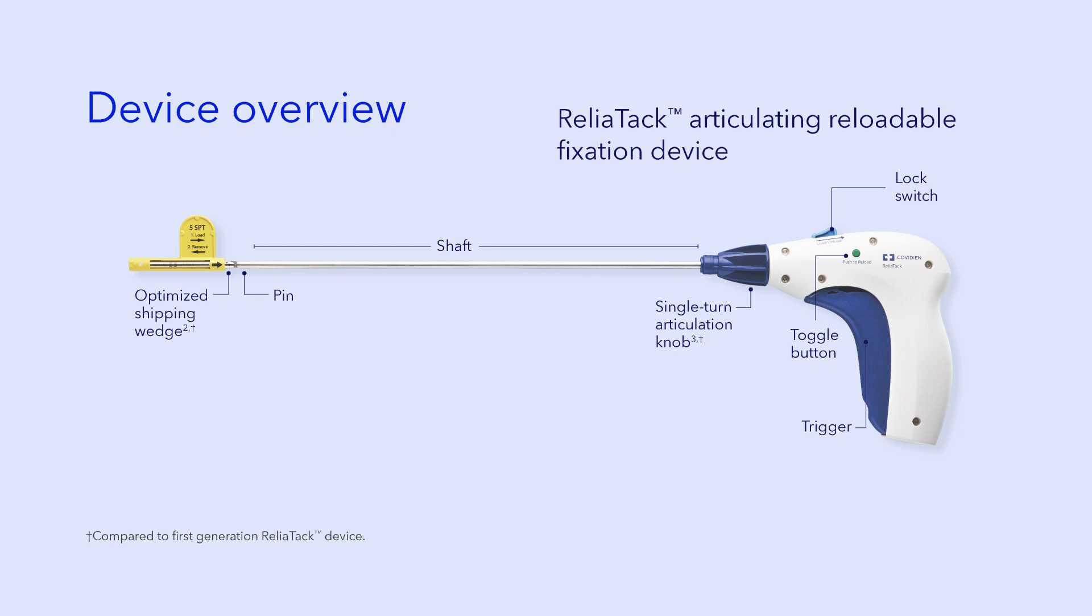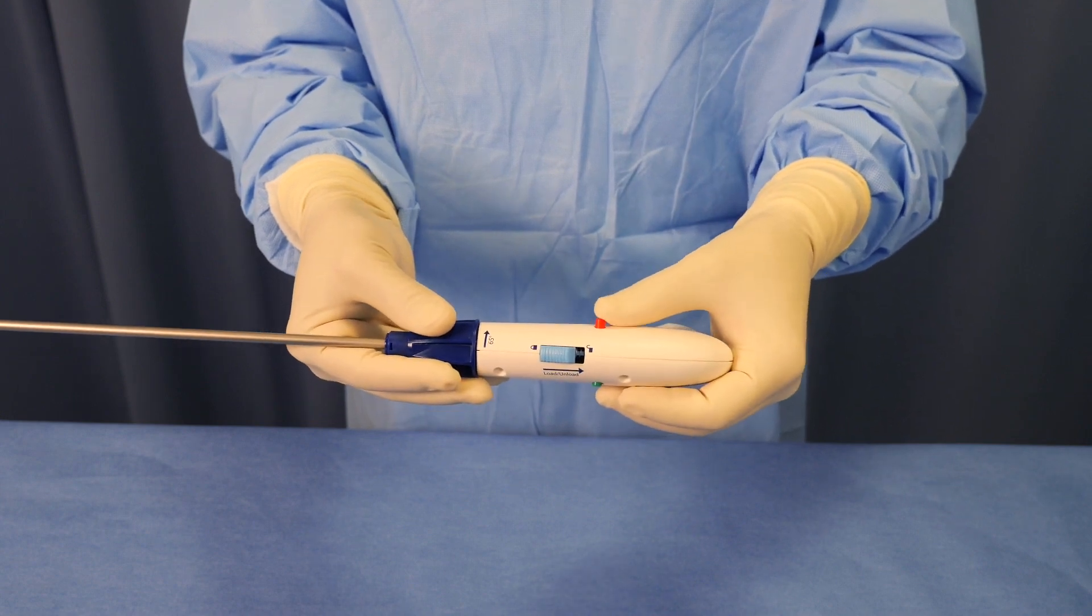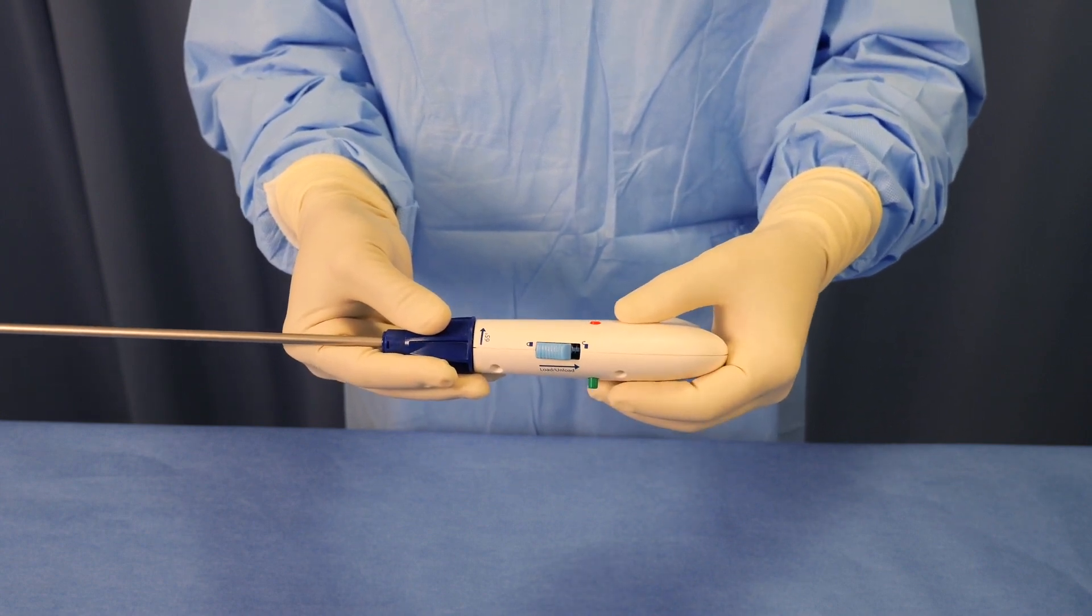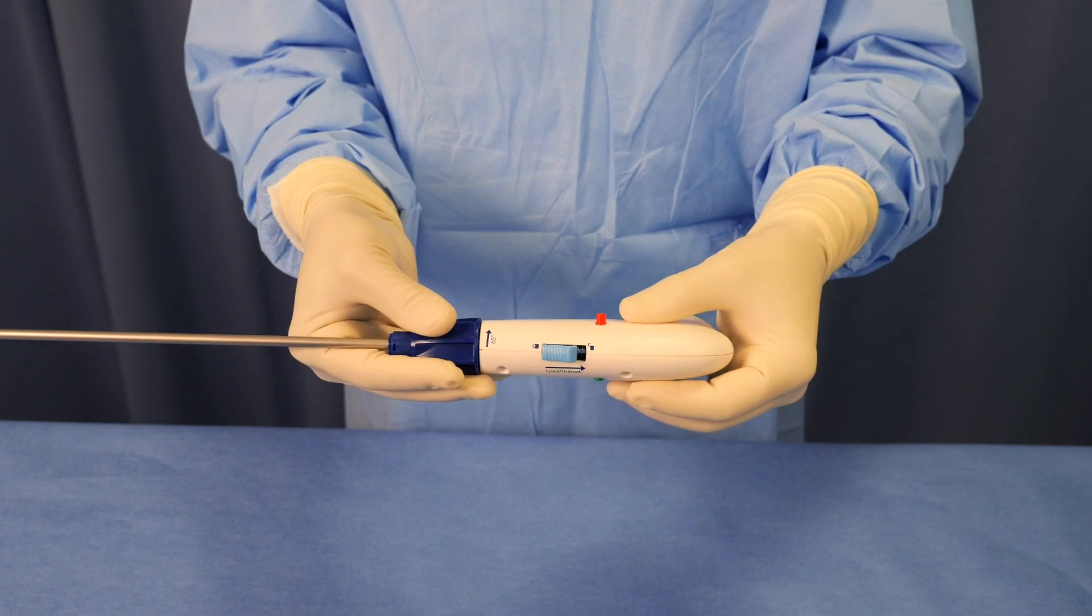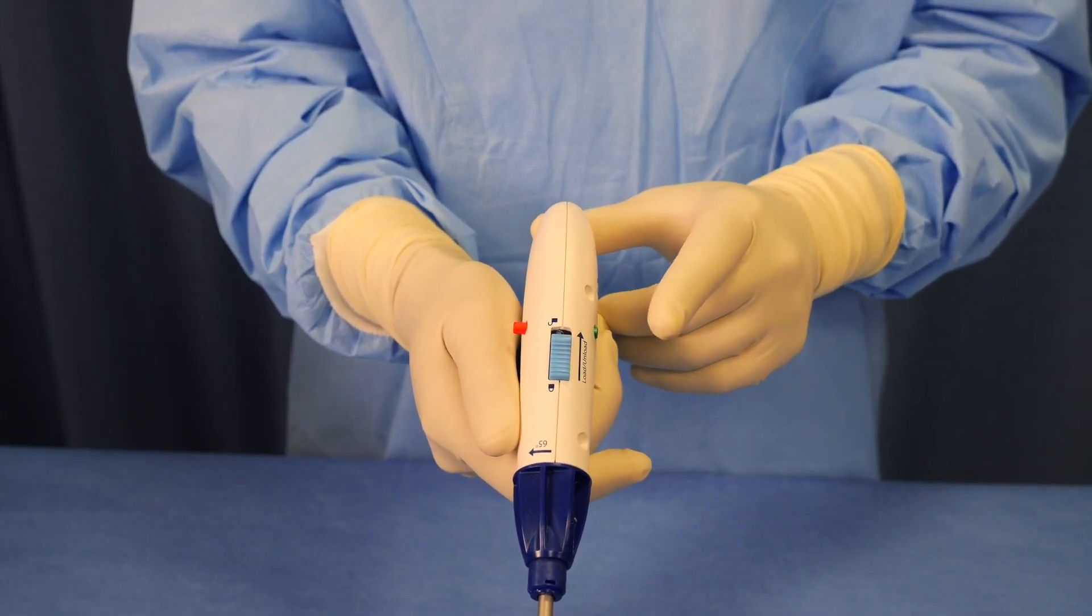The following buttons and switches are located on the device. The toggle button allows you to switch the device between fire and reload mode. An audible click will be heard when the toggle button is depressed. When held in the unlocked position, the device can be loaded and unloaded.